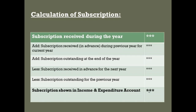We will then get the subscription shown in the income and expenditure account. To revise: take subscription received during the year, add subscription received in advance during the previous year for the current year, and add subscription outstanding at the end of the year. Then subtract subscription received in advance for the next year, and subtract subscription outstanding for the previous year. This is the basic calculation of subscription.